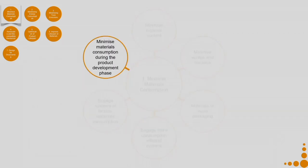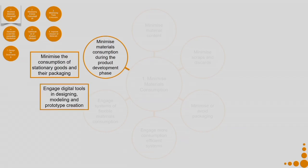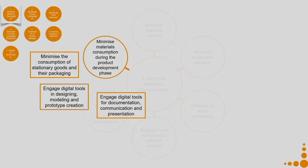Coming to the last one — minimize material consumption during the product development phase. First, minimize the consumption of stationary goods and their packaging. The product development phase might have lower impact compared to when the product is in production or in use, hence it might not be the most important phase to concentrate on, but it is still an important area. Engage digital tools in designing, modeling, and prototype creation — if you are not using digital tools, you may have to make too many physical prototypes, which is a waste of material.